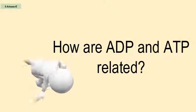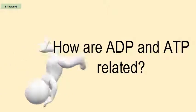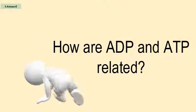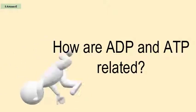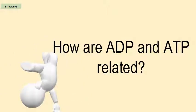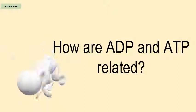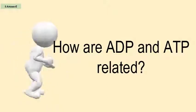ADP is the result of a loss of ADP during glycolysis. ADP is the main source of energy in animals.